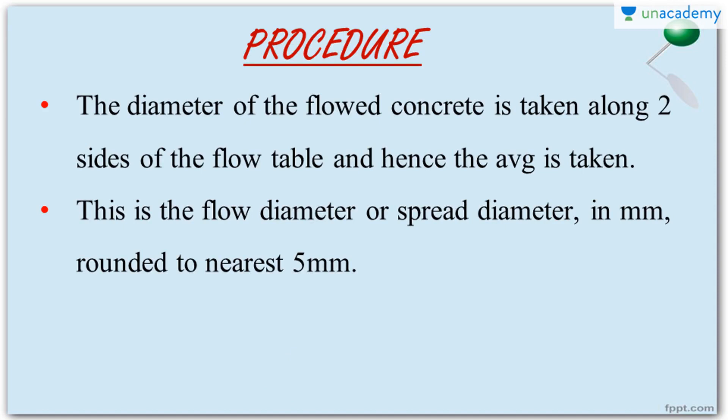Now take the measurements. Once the lifting and falling is complete, the concrete will have spread. Mark along the circumference of the concrete spread to easily measure the diameter. Measure the diameter in both directions along the sides of the square, and take the average. This result is known as the spread diameter or flow diameter, and should be rounded to the nearest 5 mm.